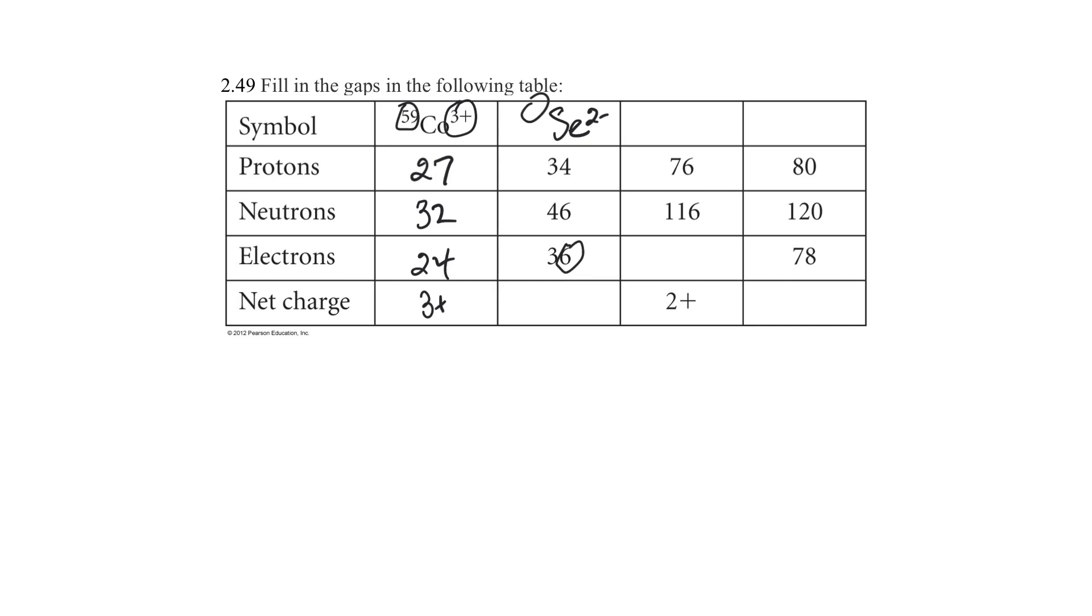The mass number is protons plus neutrons. Well, I'm given both of these numbers, 34 plus 46, and so I have 80. So this is selenium 80, and now I already know it's two negative, so it's two negative. So far, so good.